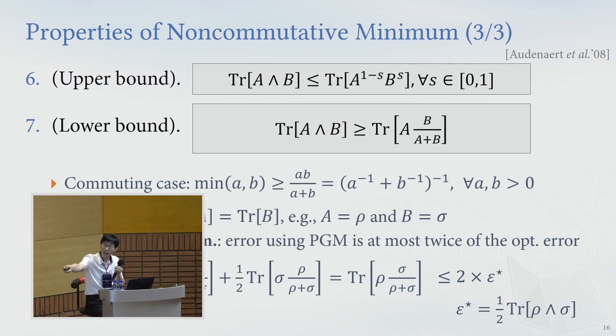So plug in, and you'll see, oh, that's exactly the lower bound to the non-commutative minimum. So this inequality I proved in the paper is actually an adaptation of Barnum and Knill's theorem. And I will use that in my proof.